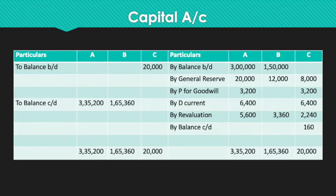C's balance is still overdrawn by 160. The new partner D brought in capital of 1,00,000; a separate column could be added for D's capital in the capital account table.